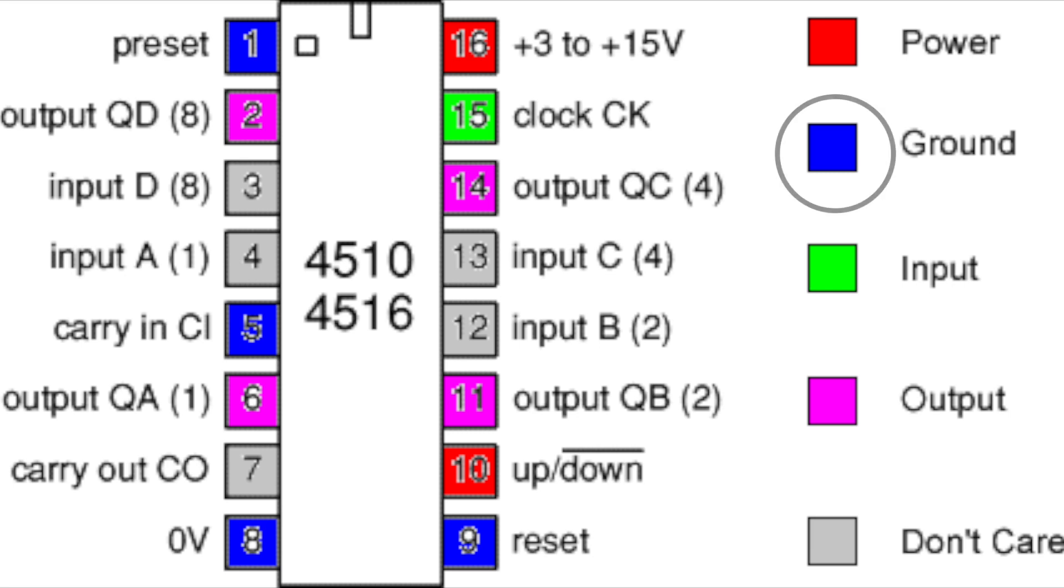The pins highlighted in blue are connected to ground. The pins colored in gray are irrelevant as they are only useful when the preset pin is high. Pin 15 receives the clock input and pin 10 controls the direction of counting. When connected to V+, it counts up and it counts down when wired to ground. The pins highlighted in pink are the outputs QA to QD and they count in BCD format. This format is a process of converting the numbers into their binary form.